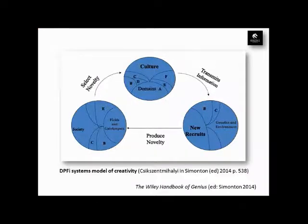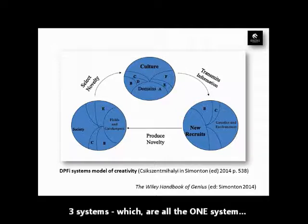So that's the Domain, Person, Field, Interaction Systems Model of Creativity — three systems, which are all the one system.